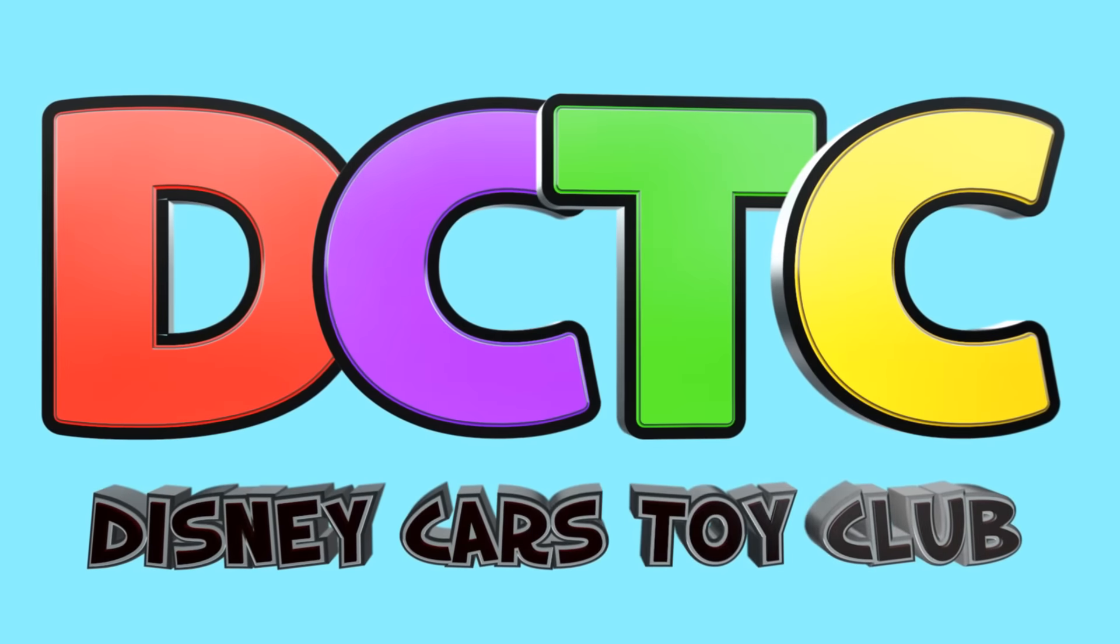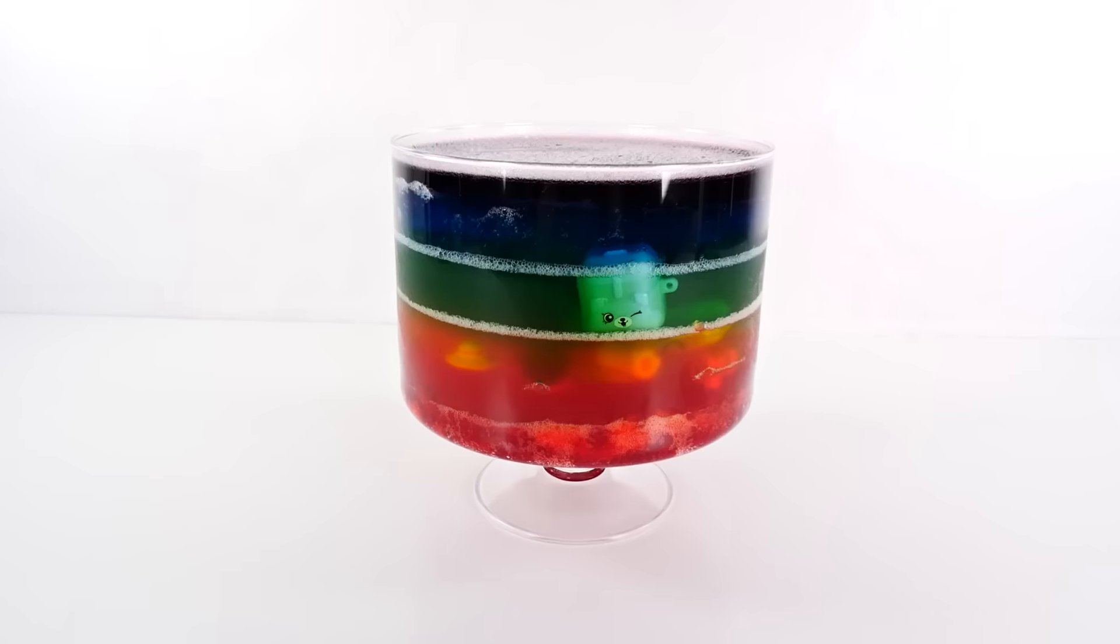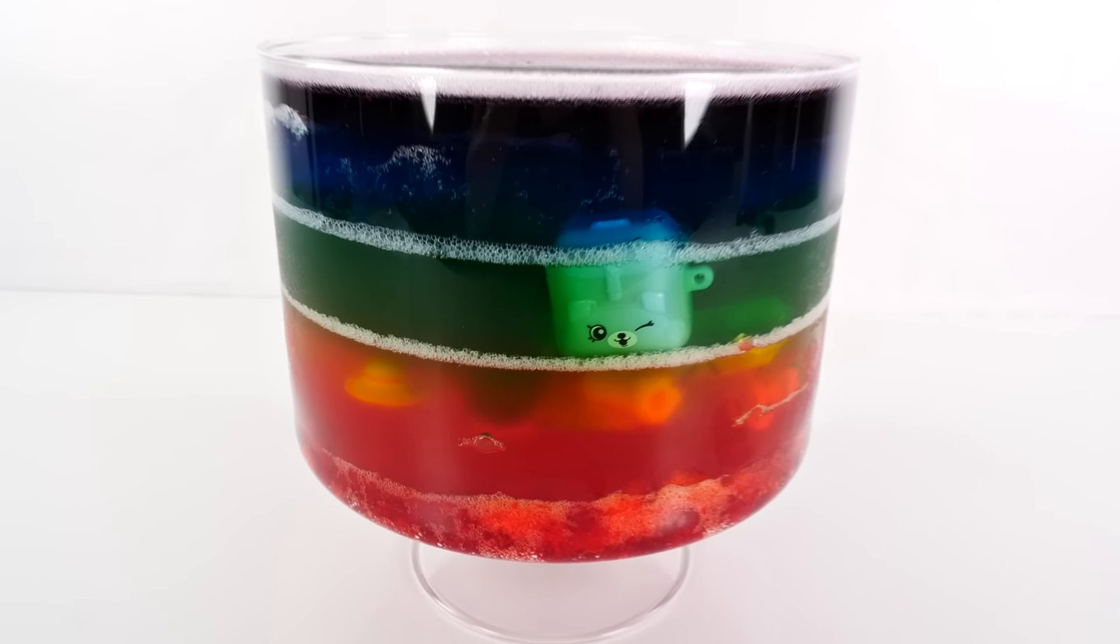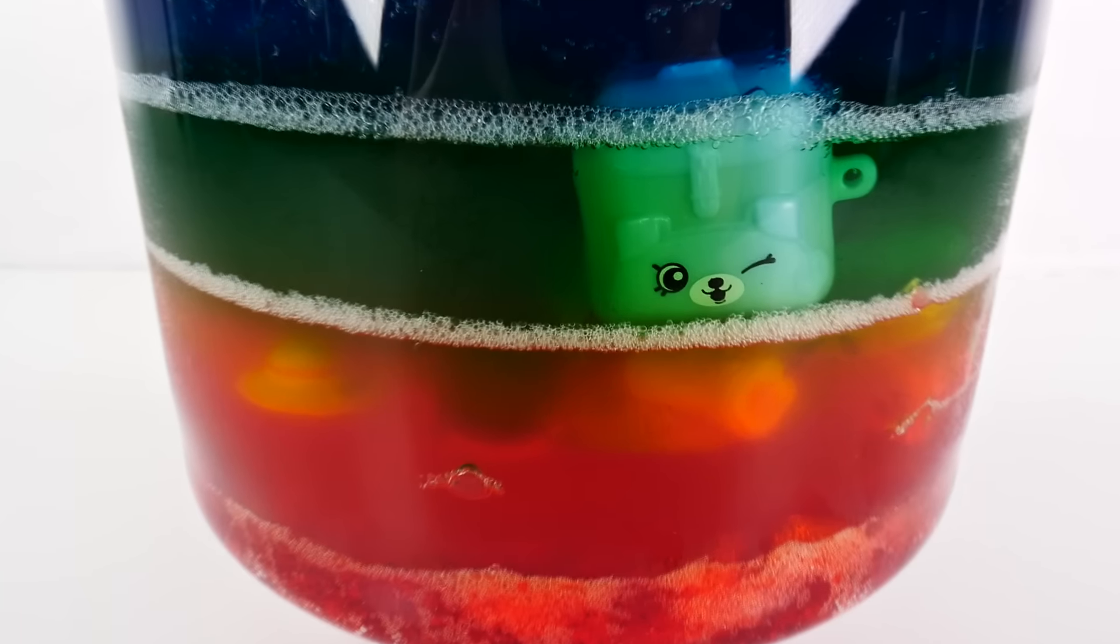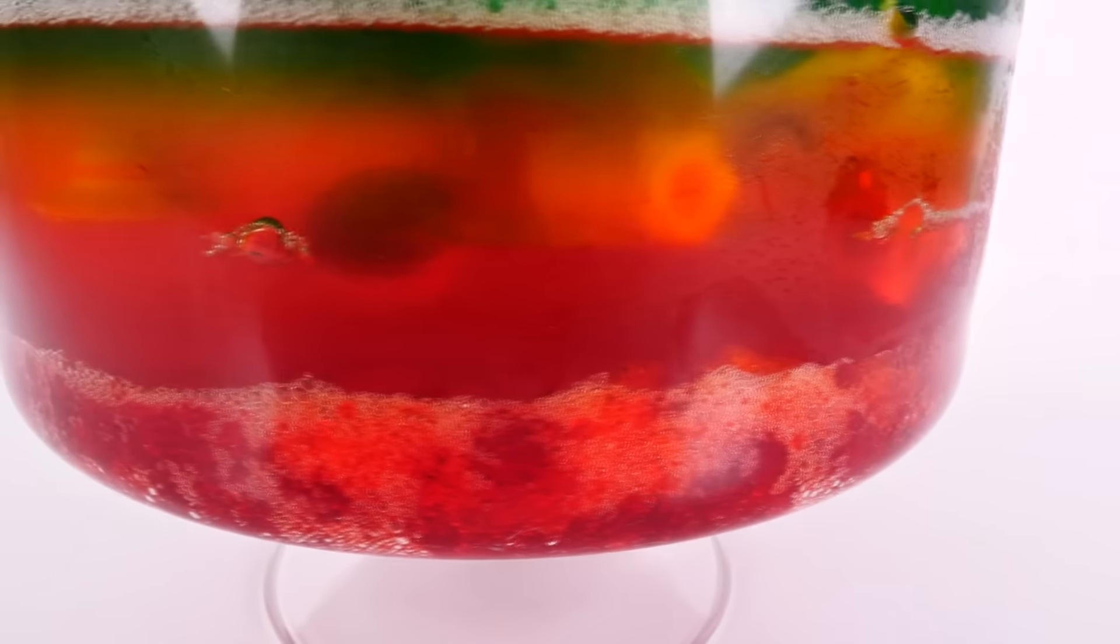Are you in the club? Hey guys, welcome back to DCTC, this is Amy Jo and boy do I have a messy video for you today. This container is full of six different layers of jello and I have lots of surprises hidden inside, including season five Shopkins.